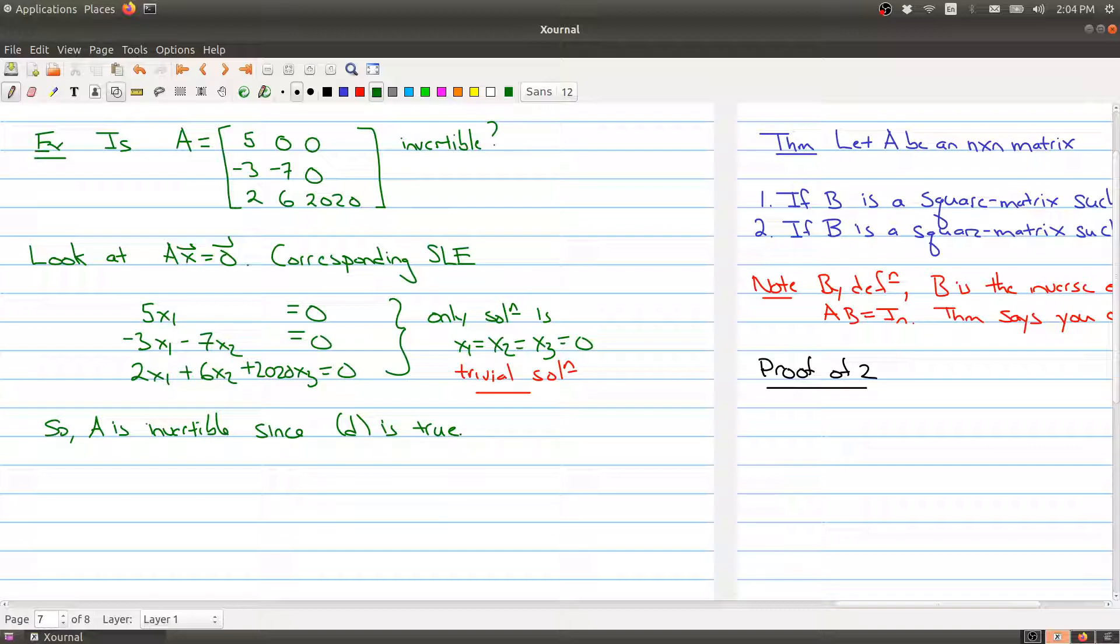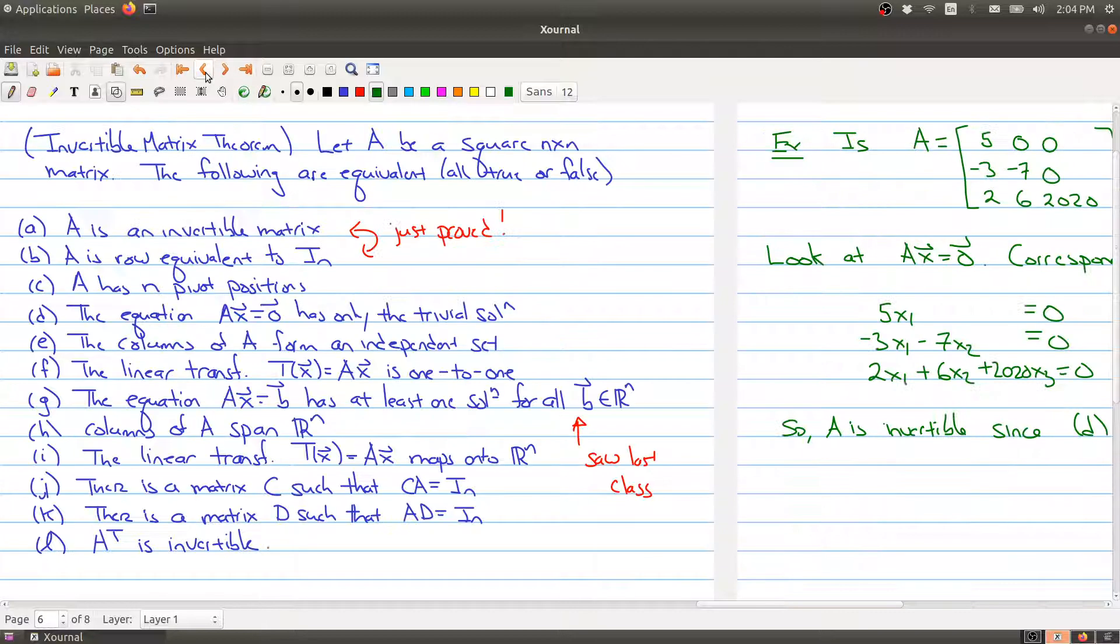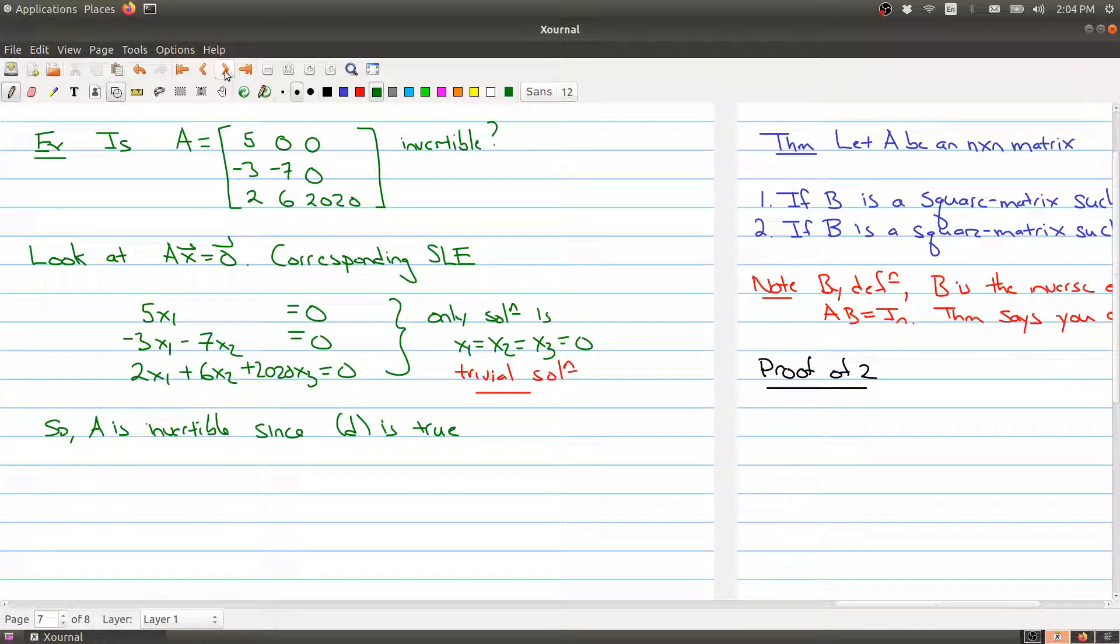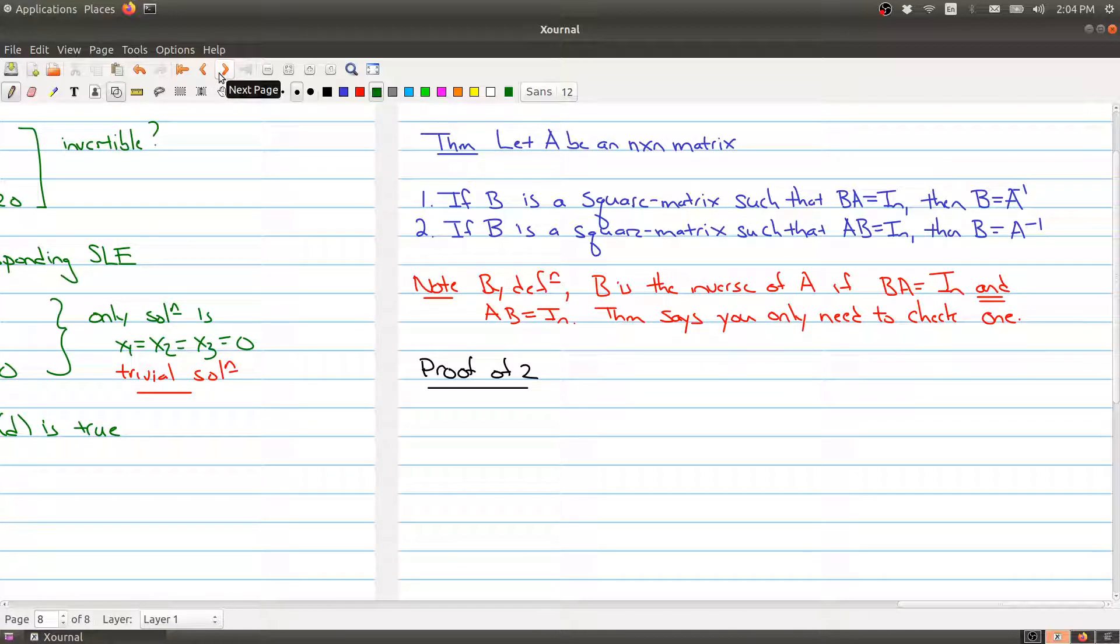This gives you a good example of how one can use the invertible matrix theorem to decide whether a matrix is invertible without trying to find the inverse. One of the last things I want to do today is talk about J and K here, which is saying that there's a matrix that I can multiply to give the identity on the left or on the right. Let's make this more explicit in this theorem here.